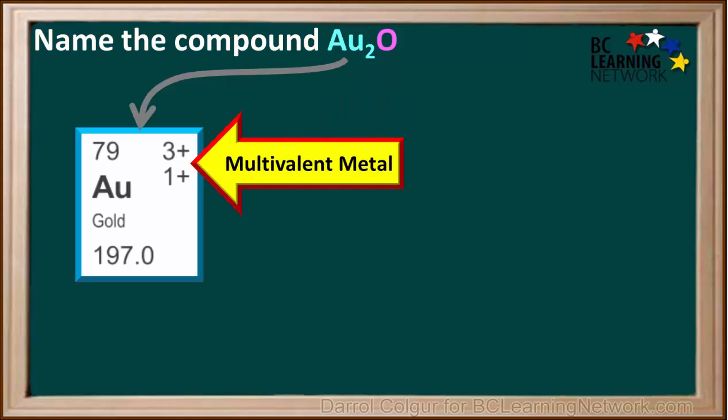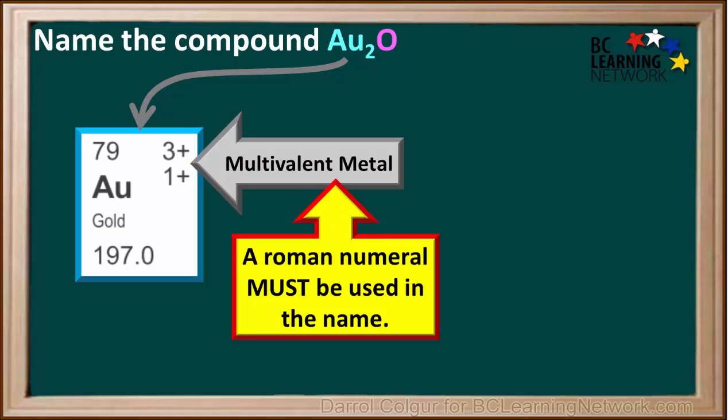We see that gold has two charges, so it's a multivalent metal. Therefore, a roman numeral must be used in this name.